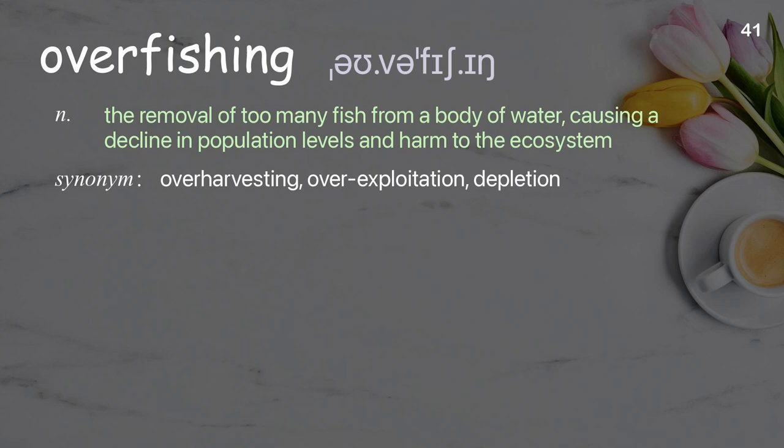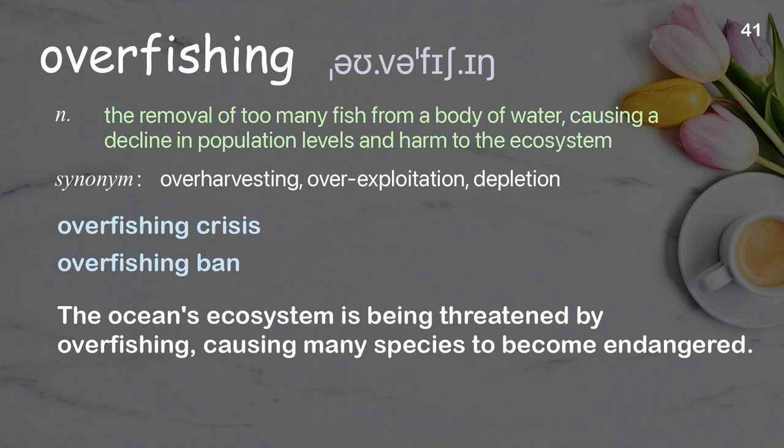Overfishing: the removal of too many fish from a body of water, causing a decline in population levels and harm to the ecosystem. Examples: overfishing crisis, overfishing ban. The ocean's ecosystem is being threatened by overfishing, causing many species to become endangered.